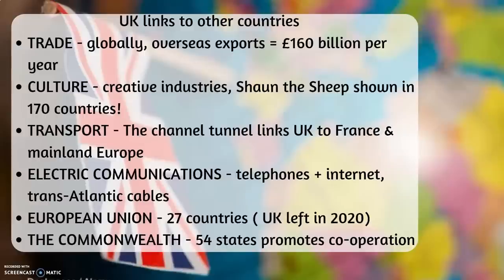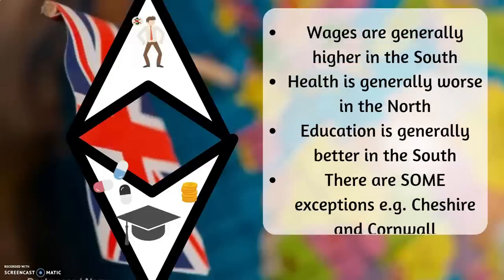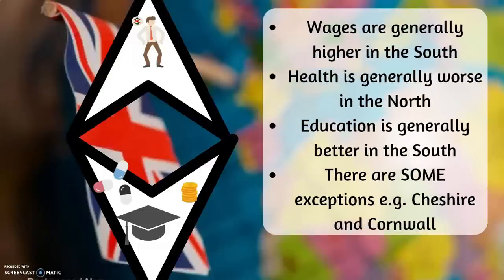The North-South divide. The decline of heavy industries has had a mostly negative impact on the north of the UK. The growth of the post-industrial service sector has mostly benefited the south. Wages are generally higher in the south. Health is generally worse in the north. Education is generally better in the south. There are some exceptions, however, such as Cheshire and Cornwall.